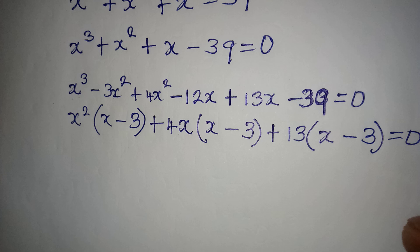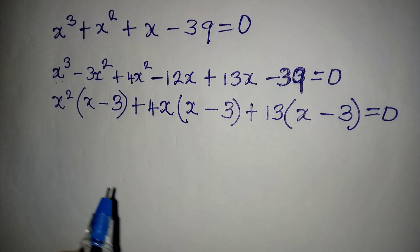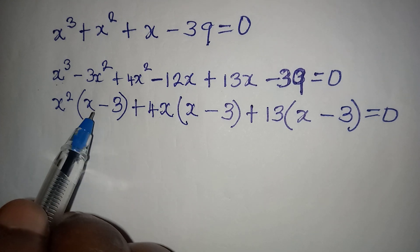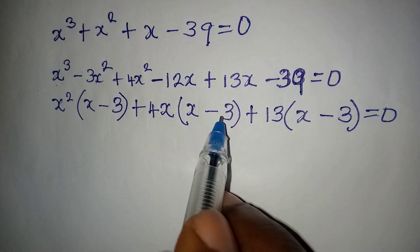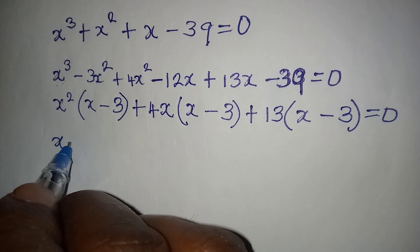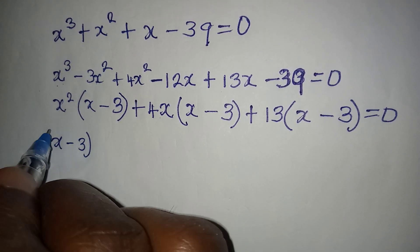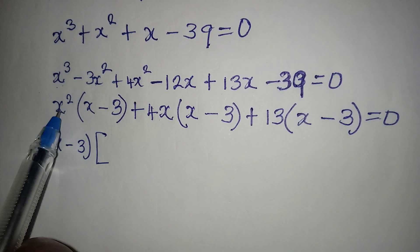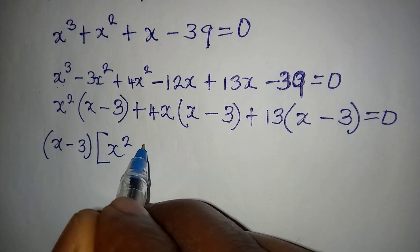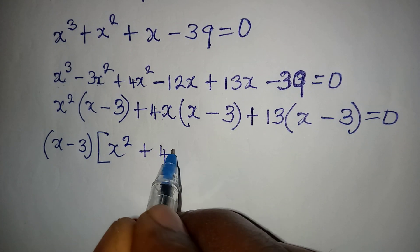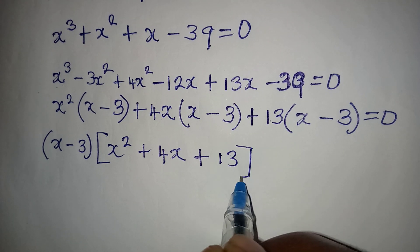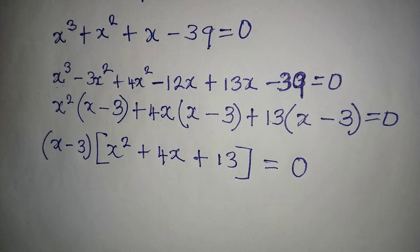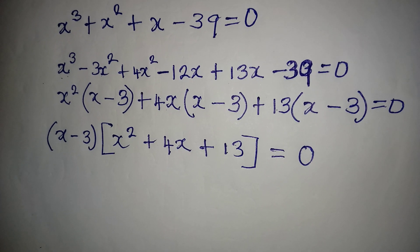We ensured we can have common factors when we factorize. Now we bring out the common factor (x - 3), and what remains is x² + 4x + 13, so we have (x - 3)(x² + 4x + 13) = 0.